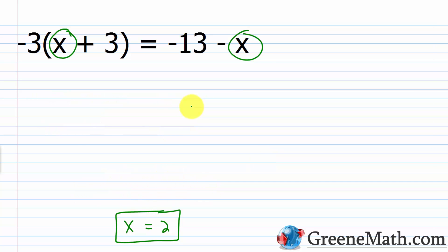So let's erase this. We would have -3 multiplied by the quantity 2 + 3 is 5, so times 5. This is equal to -13 - 2. So -3 times 5 is -15, and this should be equal to -13 - 2, which is -15. So -15 = -15. So yes, this is true. So right now, this is a true statement. So we're good to go.